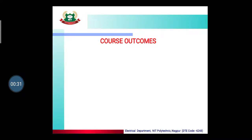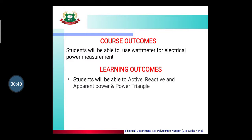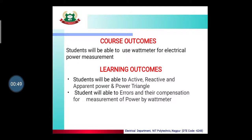The course outcome is that students will be able to use a watt meter for electrical power measurement. By the end of this lecture, the learning outcomes are: students will be able to know active, reactive, and apparent power and the power triangle, and also know the different errors that occur in a watt meter and how those errors can be compensated.